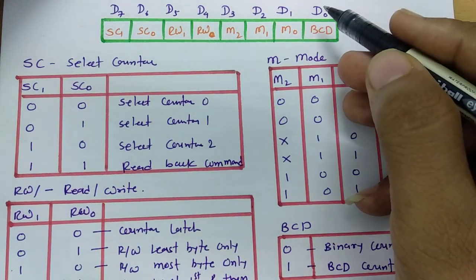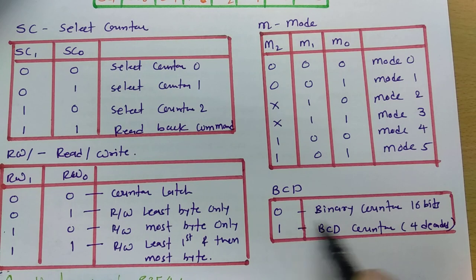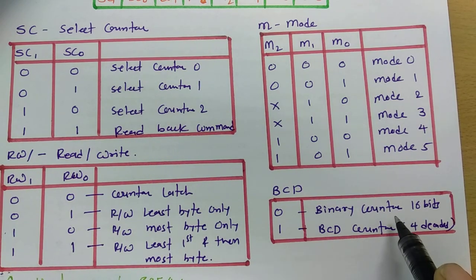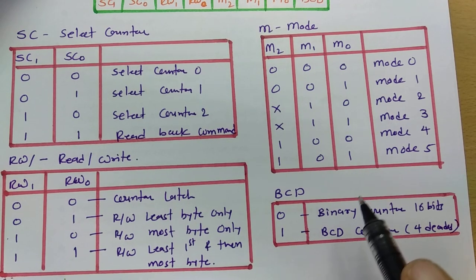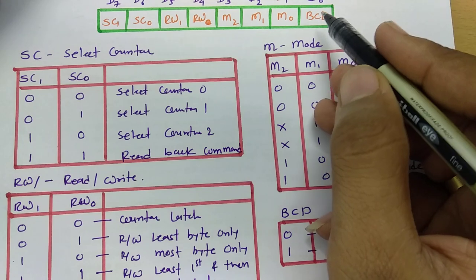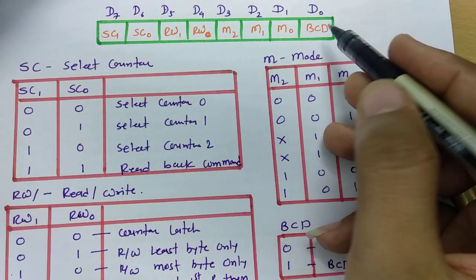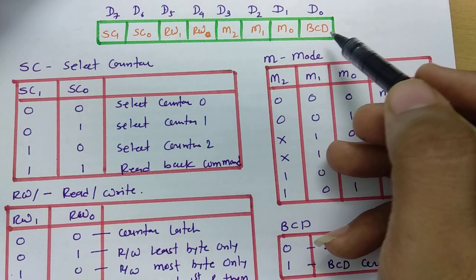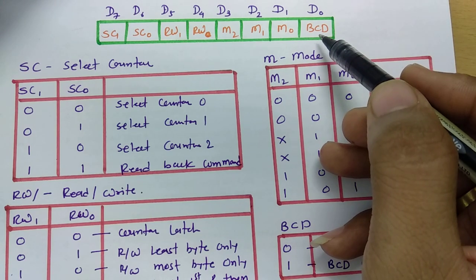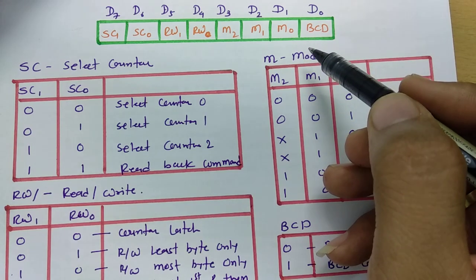The first bit D0 is the BCD bit. If it is 0, there will be a binary counter of 16 bits. If it is 1, there will be a BCD counter of 4 decades. So D0 justifies whether the counter is binary or BCD.